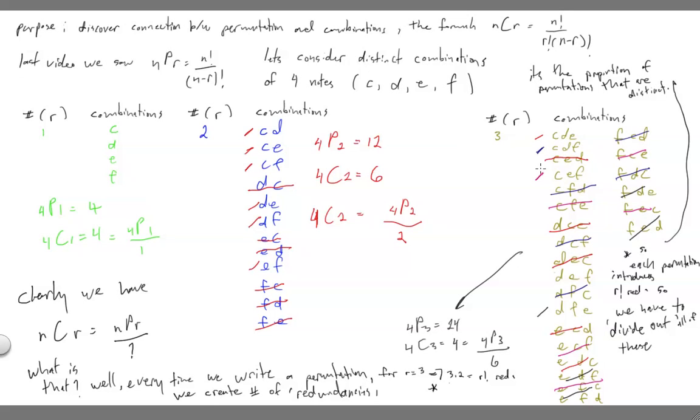So, C, D, E, that means we'd have to get rid of C, E, and D. But we'd also have to go find D, C, E, and D, E, C, and get rid of those. And we'd also have to find E, C, D, and E, D, C, and get rid of those.